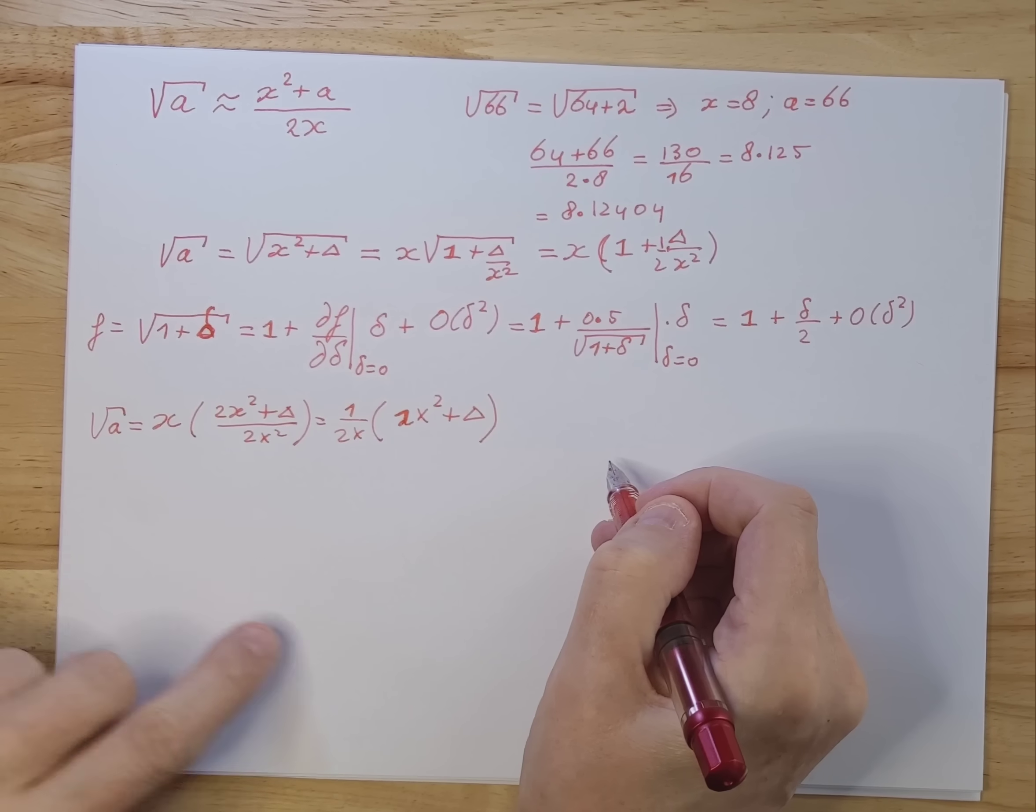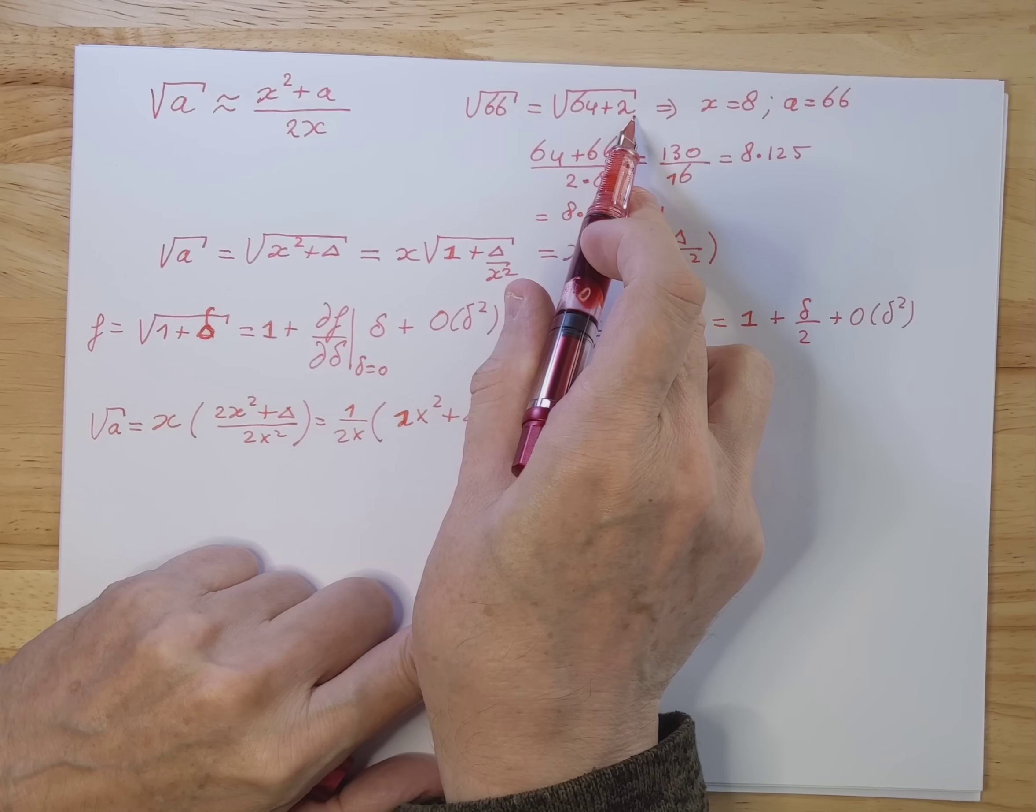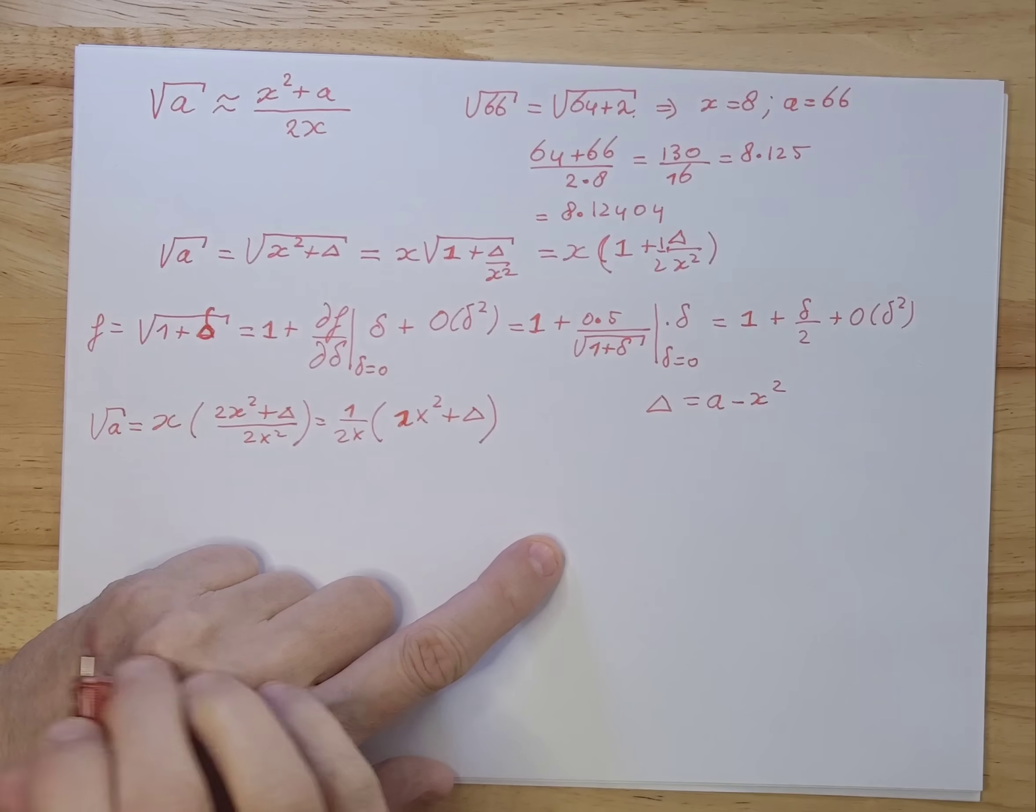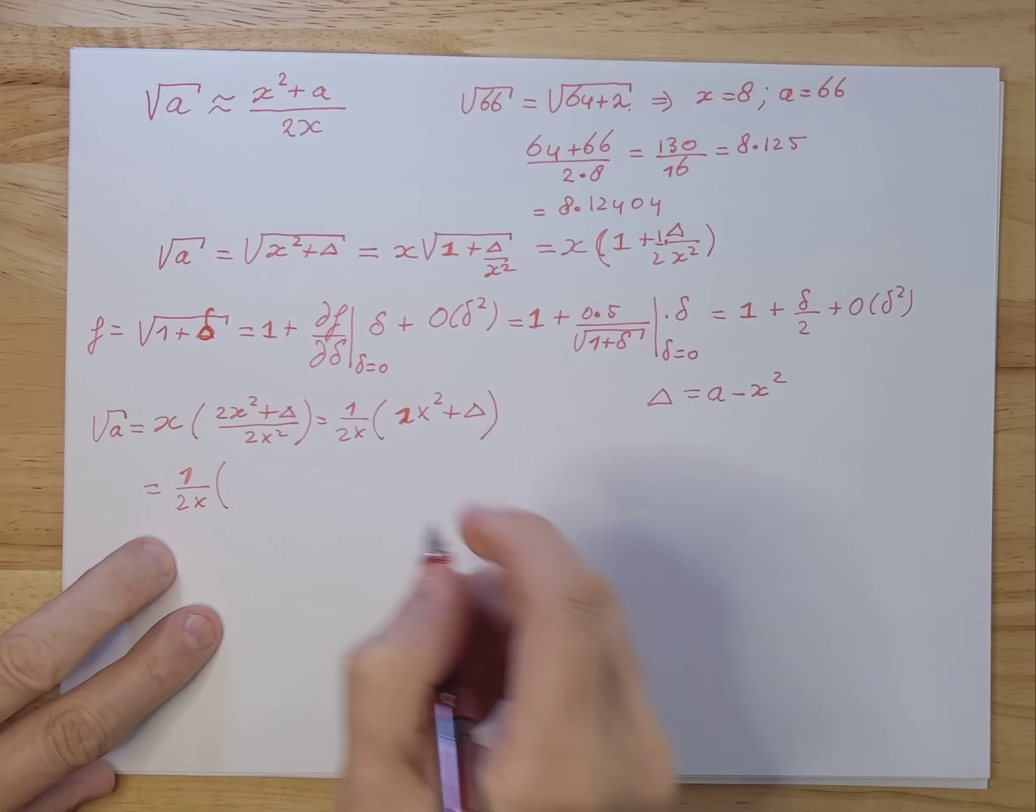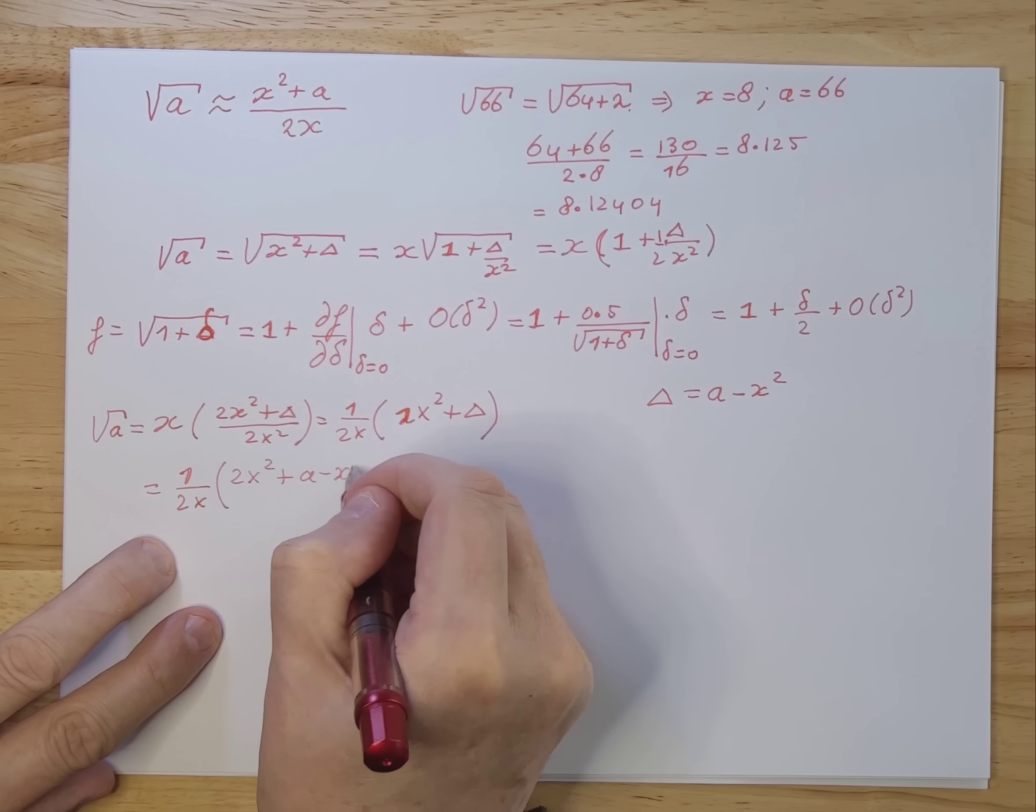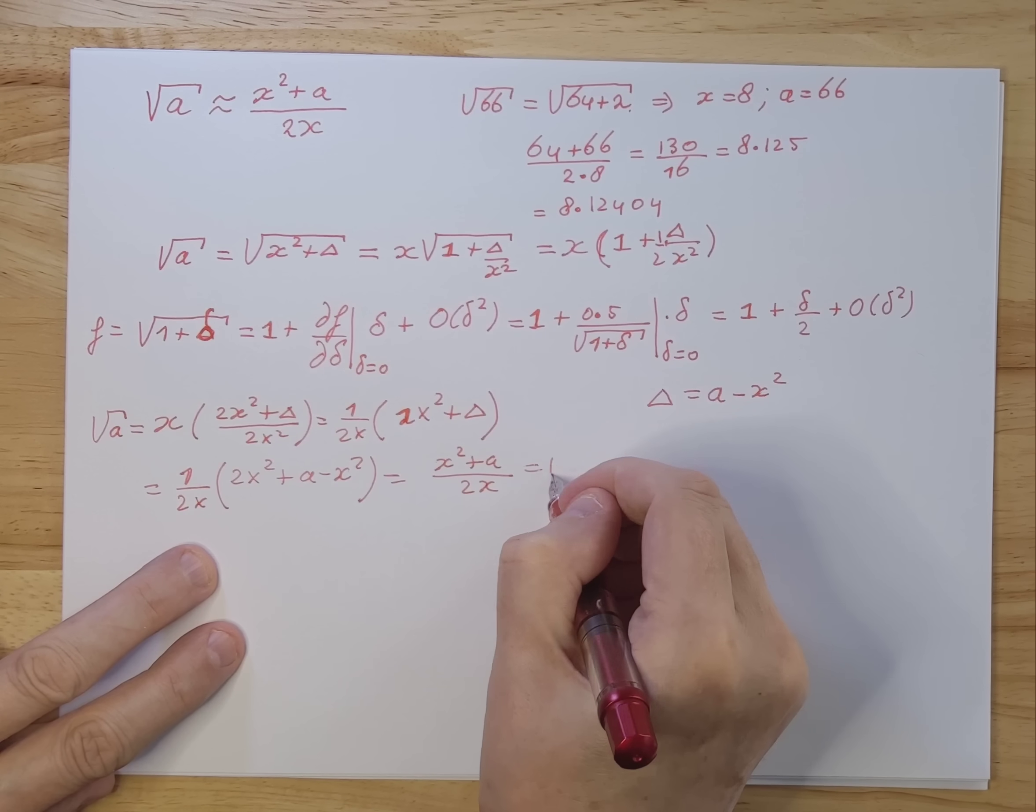And you get here 2x squared plus delta over 2x squared is 1 over 2x times 2x squared plus delta. Now the delta is the difference between what you had in this case. Delta was 2 here. So that is nothing more than a minus x squared. If you fill that out, you get 1 over 2x, 2x squared plus the delta, which is a minus x squared. So that gives you as an answer x squared plus a divided by 2x. And that's that square root of a.